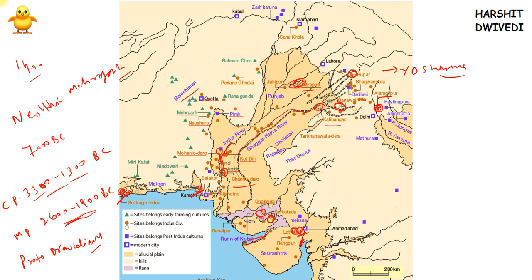Rangpur is also located in Gujarat. Rakhigarhi, a site in Haryana, is the largest Indus Valley site on the Indian side — an important fact to remember.